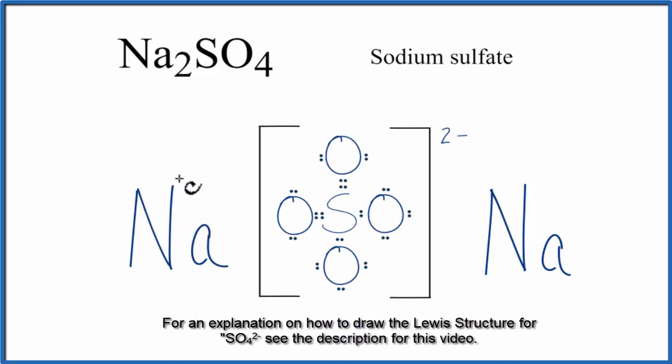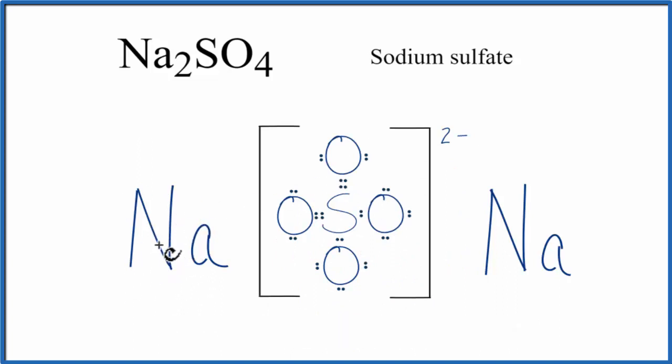In ionic compounds, the metal transfers valence electrons to the nonmetals. If you look on the periodic table, sodium is in group one and has one valence electron. It transfers that valence electron to the sulfate ion. Because electrons are negative and sodium just lost a negative charge, it becomes positive.